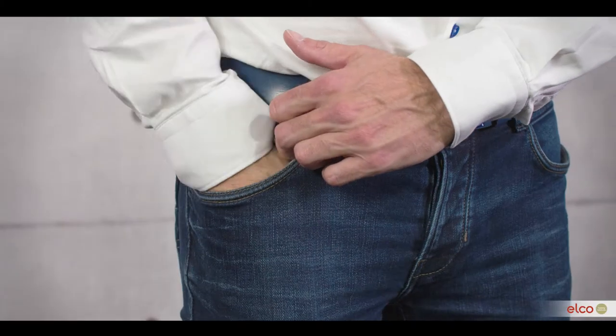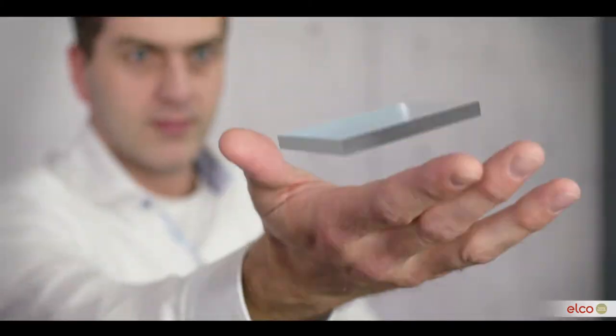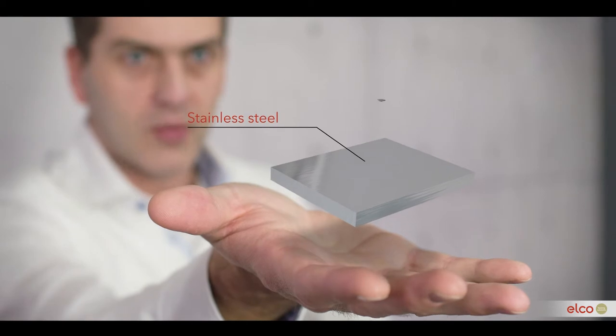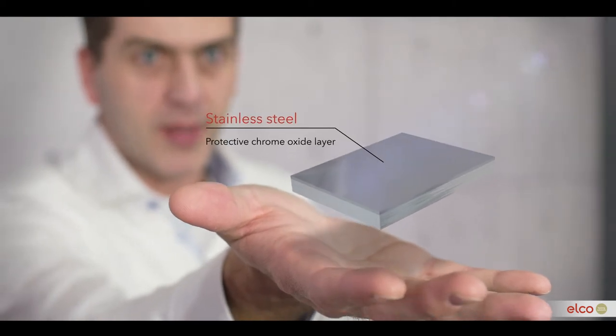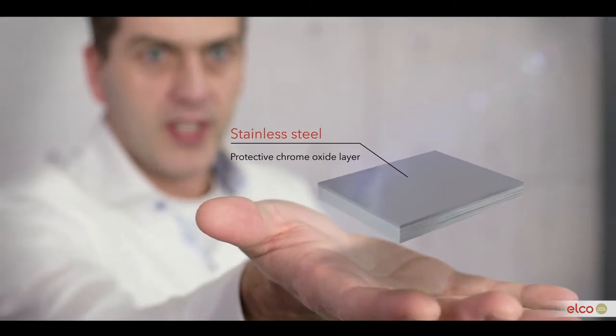Heat exchangers made from stainless steel have a protective chrome oxide layer, thanks to a chrome percentage of more than 10%. This chrome oxide layer is hardly affected by the acidic condensate, so the heat exchanger's surface remains smooth and clean.